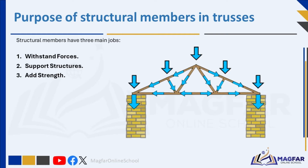Secondly, they are support structures. Imagine a structure as a team where each member plays a specific role — structural members are like the pillars and beams that hold everything up, working together to keep the structure standing tall and ensuring it doesn't collapse under its own weight. Lastly, members add strength. Think of structural members as the muscles of a structure — they add strength and power, like a backbone providing support to keep everything in place.